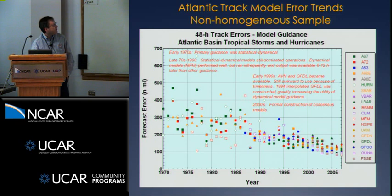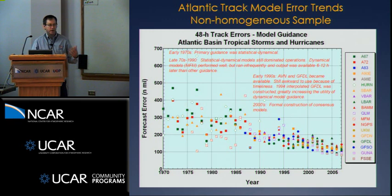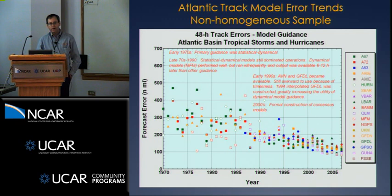In the early 1990s the Aviation model and the GFDL became available, but they were still awkward to use because they were late models. It wasn't until 1994 that the interpolation process was put into effect, which actually allowed the forecaster to make easy use of the previous-cycle dynamical model. Beginning around 2000 was the first formal construction at NHC of the consensus models — the ensembles. We do have a multi-model ensemble for hurricanes; we've been using it since 2000: GFDL, UK Met, NOGAPS, Aviation/GFS — all put together to get an ensemble mean. We've been doing that for 10 years.